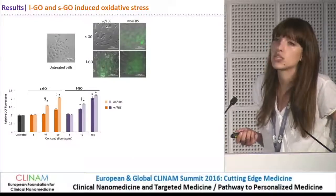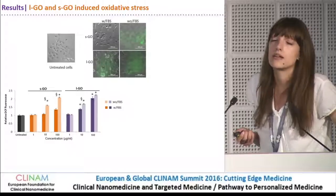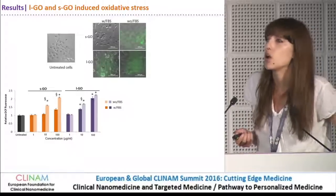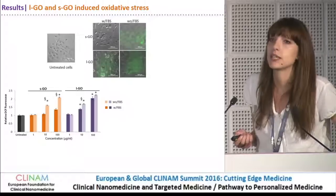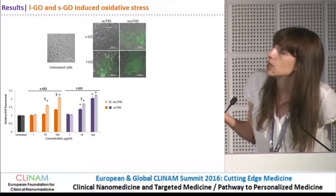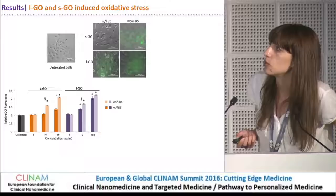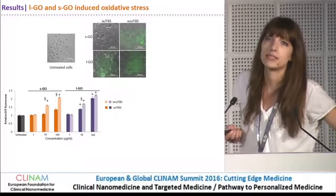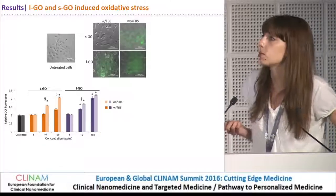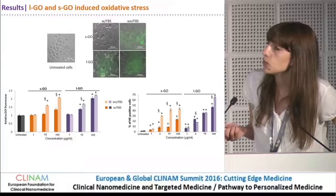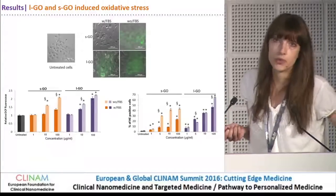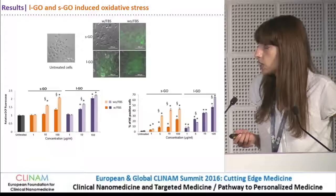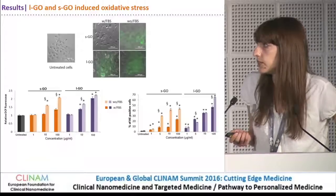First, we did DCFDA oxidation, which is a dye that enters freely into the cell, but after being oxidized in the presence of the material it becomes green, as seen in optical microscopy images. We also measured this fluorescence using a microplate reader. Then we used another probe and approach — a flow cytometry approach to confirm whether we would see the same trend.